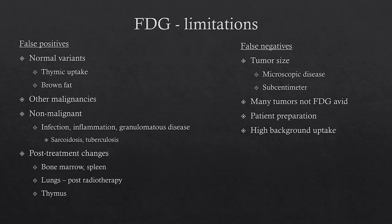Limitations of FDG imaging include false positives and false negatives. False positives could be normal variants such as uptake in the thymus or in brown fat. FDG is not very specific — you can have uptake in non-malignant conditions such as infection, inflammation, and granulomatous disease including sarcoidosis and tuberculosis. Post-treatment, you can see uptake in the bone marrow and spleen. Post-radiotherapy, uptake can be seen in the lungs, and you can also sometimes see thymic rebound with a lot of uptake in the thymus.